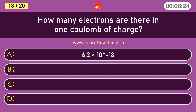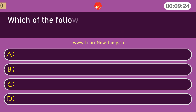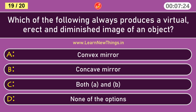How many electrons are there in one coulomb of charge? 6.2 into 10 to the power of 18. Which of the following always produces a virtual, erect and diminished image of an object? Convex mirror.